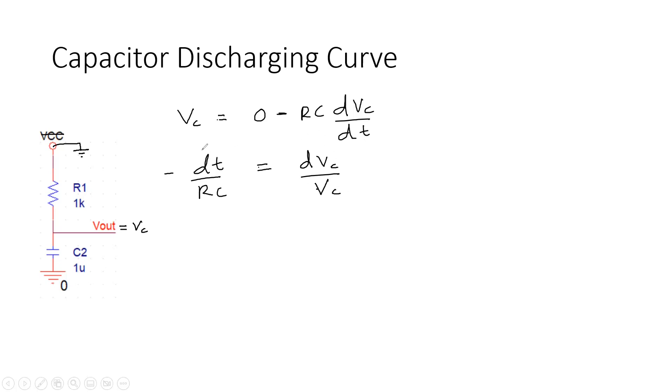We can integrate both sides. T goes from 0 to T. At the same time, V goes from let's say V dash, because it's already charged to a certain voltage VC. Originally it was 0. V dash is actually VCC.